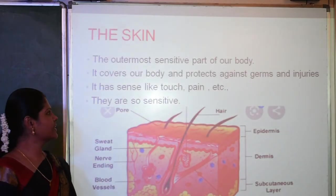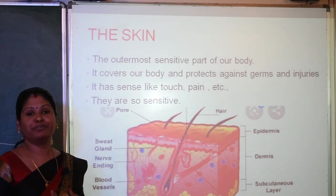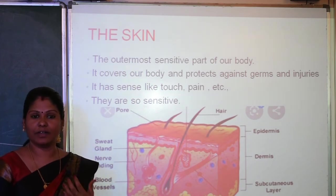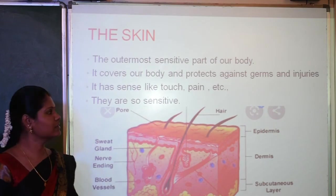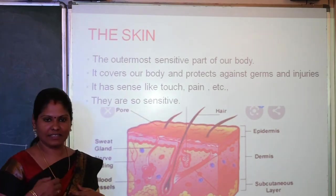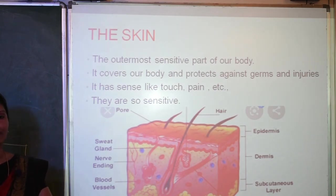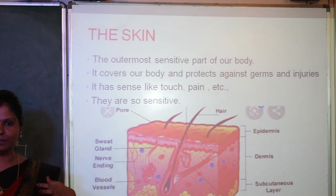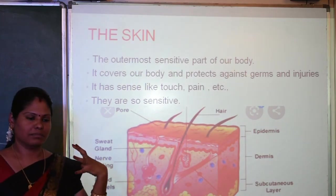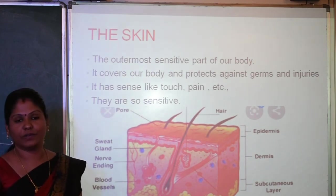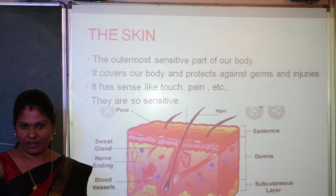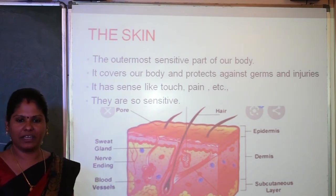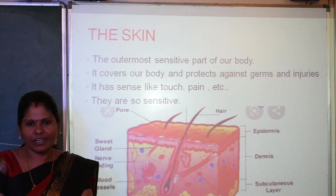The last sense organ is the skin. Our skin helps us feel cold, hot, touch, pinching, and pain. The skin is the outermost and most sensitive part of our body. It covers our body and protects us against germs and injuries. It covers our muscles and body parts. The skin also has senses — if you don't feel pain, something is wrong; the skin lets us feel pain as a warning.